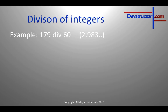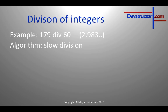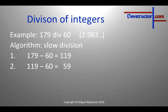But the computer works a bit differently and could use a so-called algorithm called slow division. In this algorithm, the computer will check whether the first number is bigger than the second number, and if this is true, the computer will calculate iterations. The first iteration would be 129 minus 60, which equals 119. Since 119 is still bigger than 60, it will start a second iteration: 119 minus 60, which equals 59.